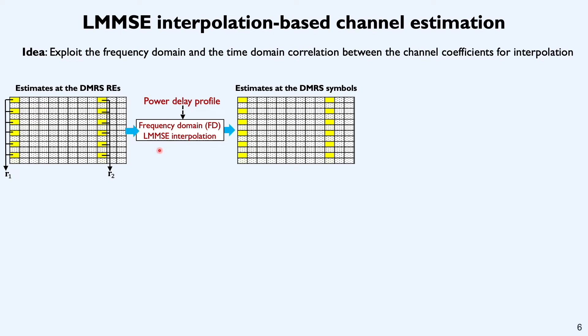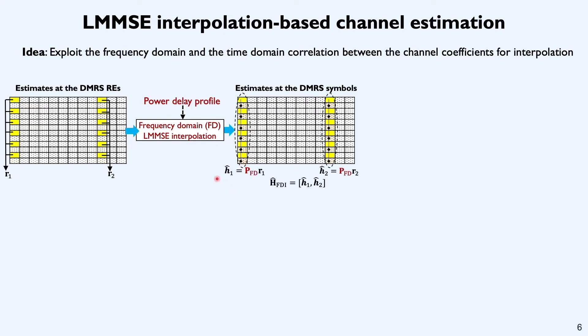Let me explain how FD interpolation is performed. Let's say channel estimates at the DMRS REs at symbol location 1 are collected in a vector r1. In FD interpolation, we construct this vector h1 hat. That's simply a multiplication of the interpolation matrix PFD with r1. Similarly, you can construct h2 hat.